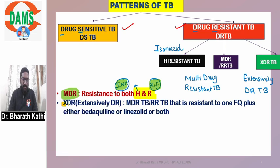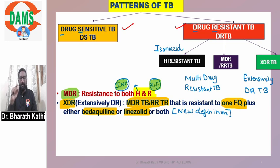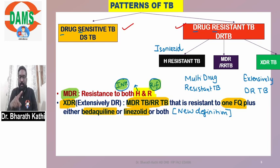Now here comes XDR-TB — extensively drug-resistant TB. XDR-TB is an MDR-TB or rifampicin-resistant TB that also becomes resistant to one fluoroquinolone, plus either bedaquiline or linezolid, or both. This is the new definition. Previously, resistance to an aminoglycoside was part of the XDR-TB definition, but aminoglycoside has now been removed.